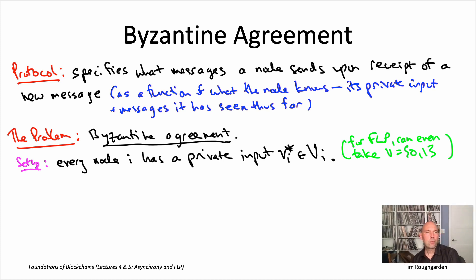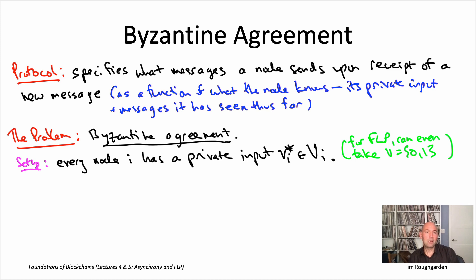The FLP impossibility result is already true even with just two possible values. A private input is information possessed only by node i; the other N minus one nodes have literally no idea what V* i is. Under what conditions does a protocol solve Byzantine agreement? Very much like Byzantine broadcast, we have three properties with exactly the same names: termination, agreement, and validity. Validity looks a little different because all nodes have private inputs, not just one sender.